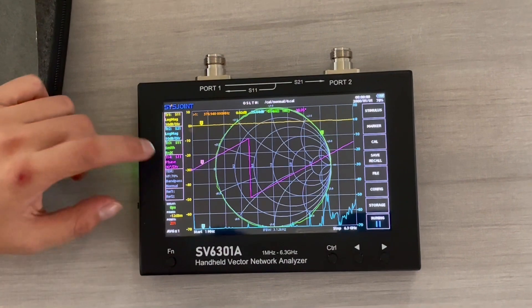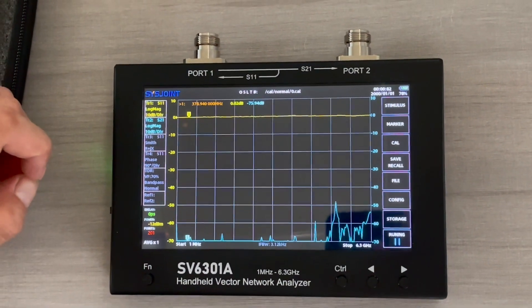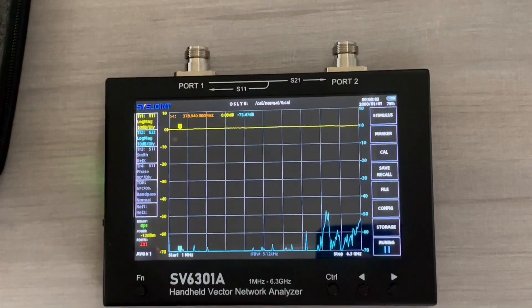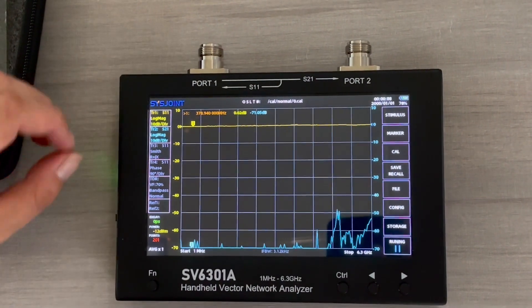So the first thing we do is disable trace 3, trace 4, and leave only two traces here. Today we only need two traces. One is for S11 and another will be S21. Both of them are logmeg.